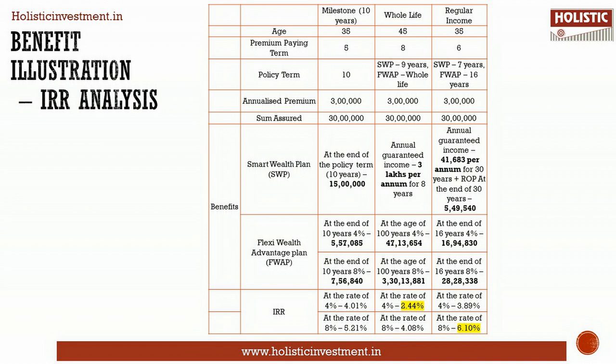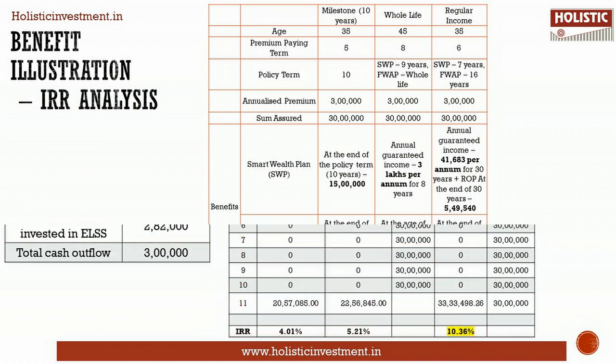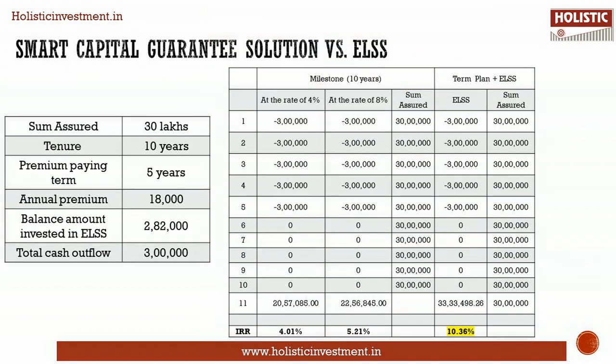Let us investigate other options where life cover and investment are done separately. A pure-term policy for a sum assured of Rs. 30 lakhs can be taken for a tenure of 10 years with a premium paying term of 5 years — mirroring the Milestone 10-year combination for comparison. After paying the pure term premium, the balance amount can be invested depending on suitability. Here, it is assumed that the balance amount is invested in an ELSS fund for 5 years, which grows and matures at the end of 10 years.